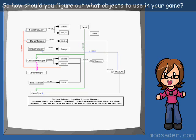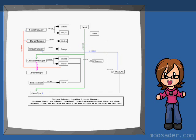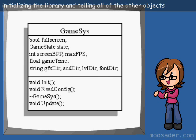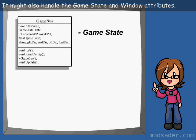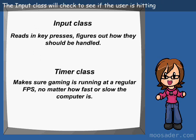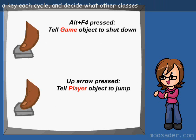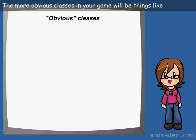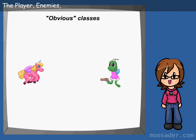So how should you figure out what objects to use in your game's structure? Get a piece of paper or open a Word document and write them down while I step through these. Your game itself is an object. You might create a game object to handle things like initializing the library, and telling all the other objects to initialize and get ready to start the game. It might also handle the game's state and window attributes. You'll also need classes like an input class and a timer class. The more obvious classes in your game will be things like the player, enemies, bullets, and power-ups.